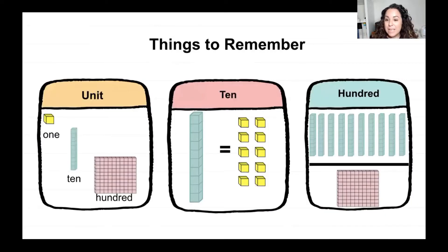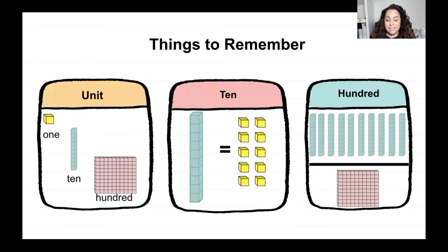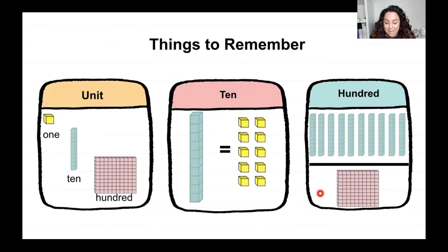Before we get started, we have some things to remember. We're going to be working a lot today with units. As a reminder, we have 1s, 10s, and 100s — or H-T-O: hundreds, tens, and ones. Also remember: 1 ten is equal to 10 ones, and 10 tens is the same as 100. So I would trade 10 of these littles for this big.